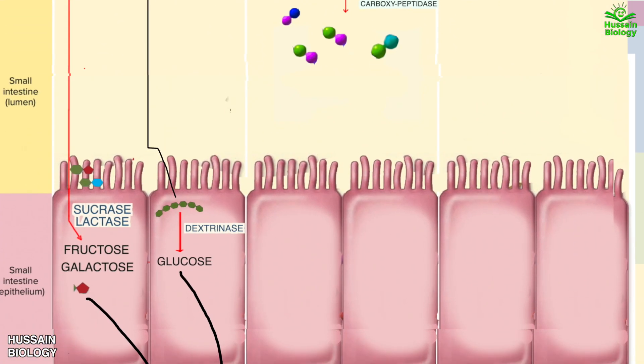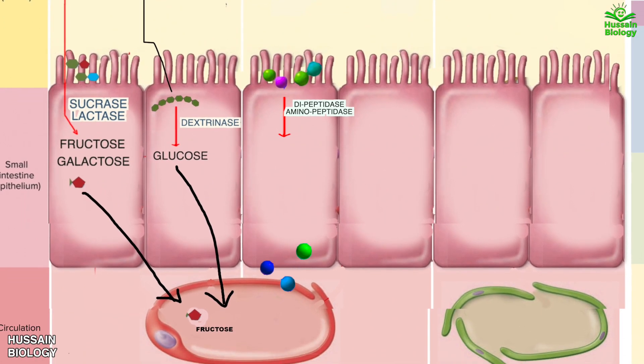Then these dipeptides enter into the brush border where they are acted upon by enzymes like dipeptidase, aminopeptidase and we get the formation of free amino acids which eventually can enter into the blood circulation.